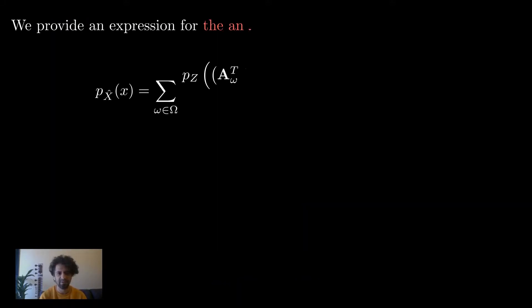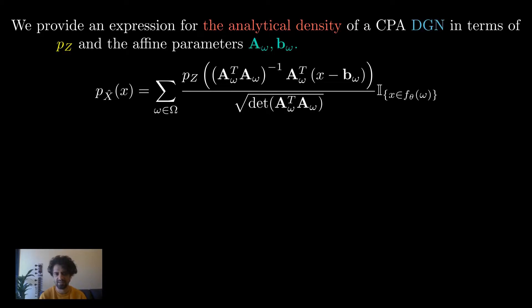In this paper we provide an expression for the analytical density of a continuous piecewise affine deep generative network in terms of the input density p_z, per-region parameters a_d_omega and b_omega. Here i denotes an indicator function.